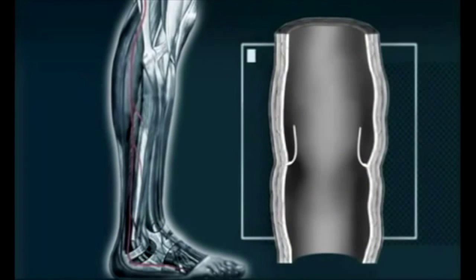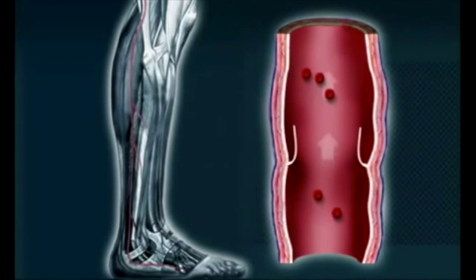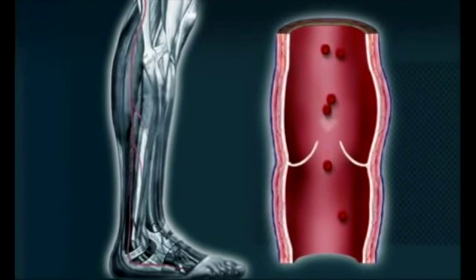The vein's main task is to remove deoxygenated blood. This has to be pumped back to the heart from different parts of the body against the force of gravity.